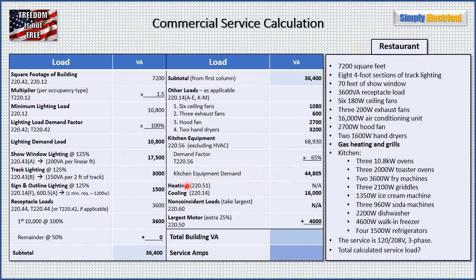Moving on to heating: normally per 220.51 the heating load is at 100%, but we don't have electric heat — we have gas heating. So that's not applicable. For non-coincident loads, per 220.60, we take the largest of any loads that do not operate at the same time. Typically it's heating and cooling that are interlocked so one doesn't run when the other does, and we only take the largest. Since we have no electric heat, it's a moot point, and we just take the 16,000 VA cooling load.